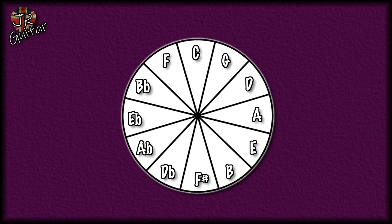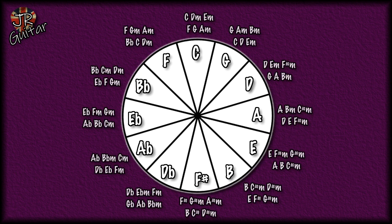Here are all the chords in all 12 keys, and what you begin to notice is that the closer together any two keys are on this cycle, the more chords they share. The key of C major has C, D minor, E minor, F, G and A minor. The key of G has G, A minor, B minor, C, D and E minor. If you take the key of C and turn the D minor into a D major and replace the F with a B minor, you've got the key of G.